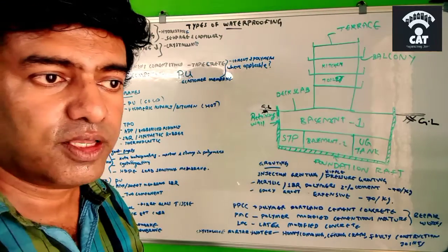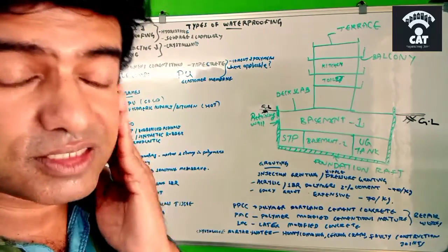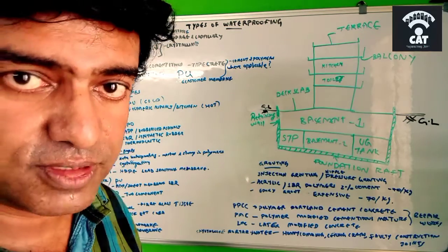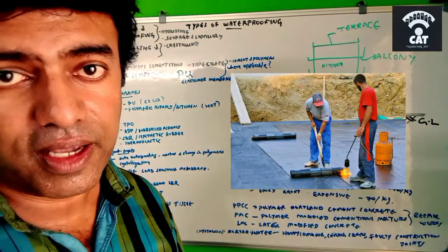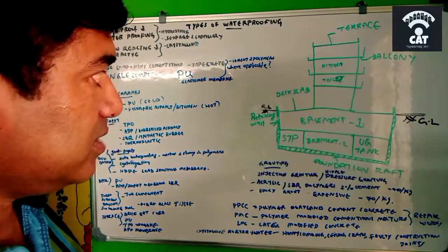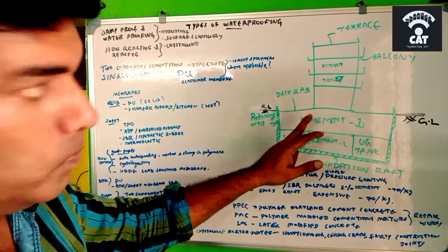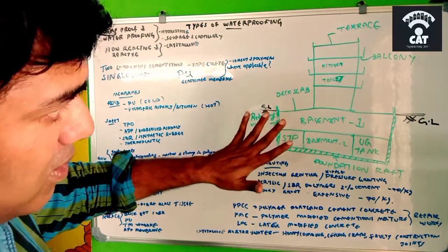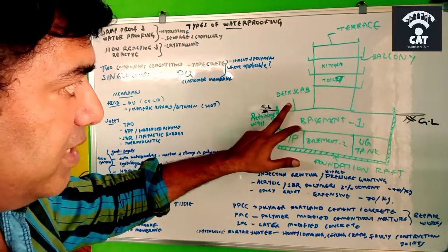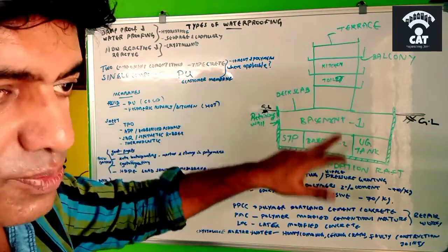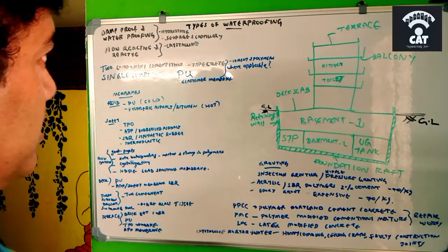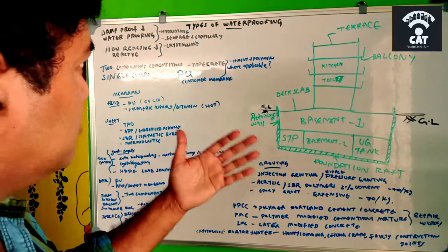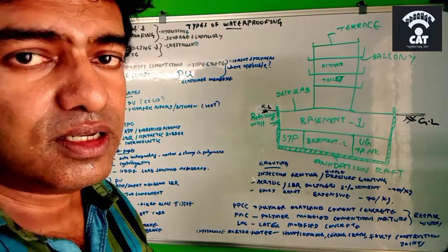The difference between polyurethane and bitumen application is that polyurethane is a cold treatment — it can be applied without heat. Asphalt or bitumen requires heat to be applied on the surface. The key difference between kitchen/toilet and deck slab areas is that the deck is open to high temperatures and rain, covers a large area, while kitchen and toilet areas are small with less temperature variation. For small areas, we use two-component cementitious material; for large areas, we use single-component material.